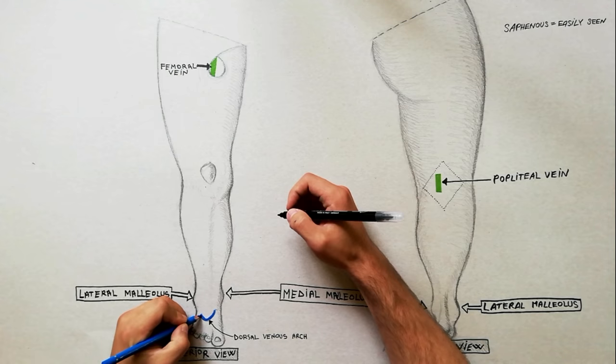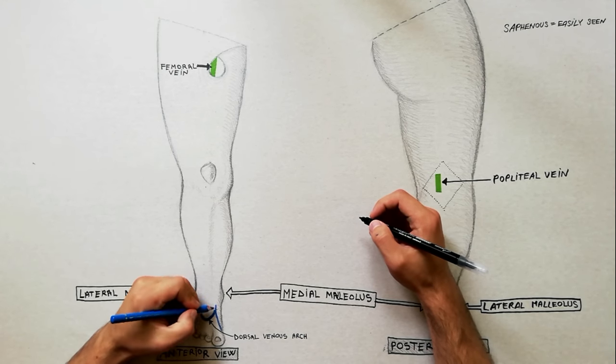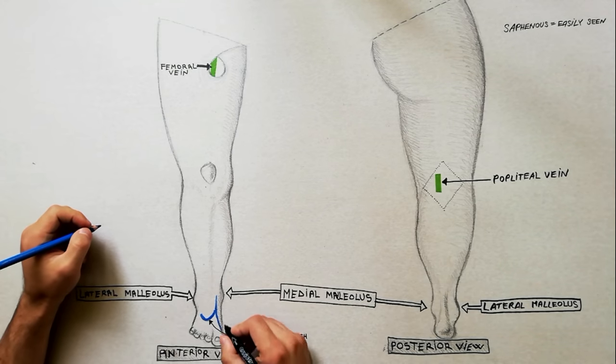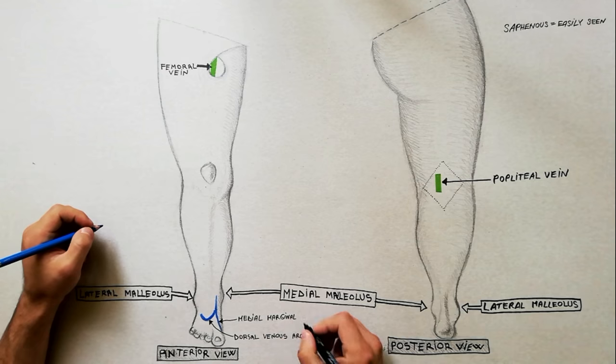The great saphenous vein is formed on the dorsum of foot by the union of the medial end of the dorsal venous arch of the foot and medial marginal vein of the foot.